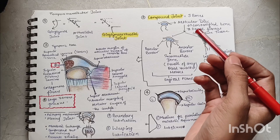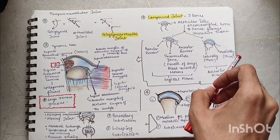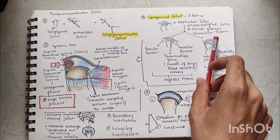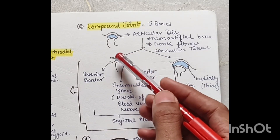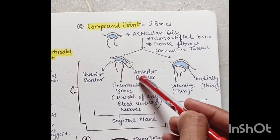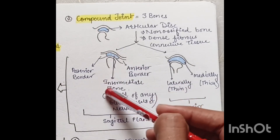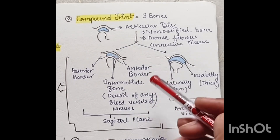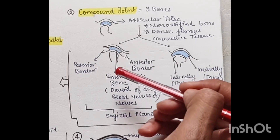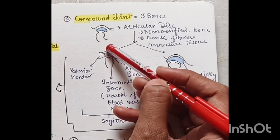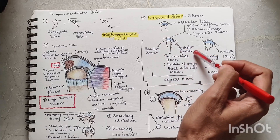The TMJ can be viewed in two planes: the sagittal plane and the coronal or anterior plane. In the sagittal plane, the disc is divided into three parts: the anterior border, the intermediate zone — which is devoid of blood vessels and nerve supply and is where the condyle articulates with the articular surface of the temporal bone — and the posterior border.